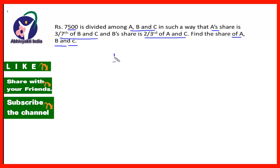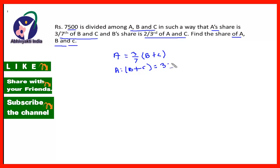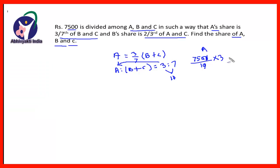Friends, the first condition is that a's share is 3/7 of b plus c, so this is a is to b plus c is equal to 3 is to 7. It means out of 10 parts, 3 parts will be of a. So 7,500 divided by 10 — making 10 parts of 7,500 — and out of that 3 parts will be of a. So 750 multiplied by 3, which is equal to Rs.2,250. So A's share is Rs.2,250.